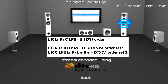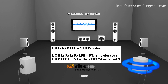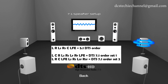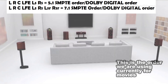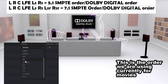DTS 5.1 were given in compact discs in the order L R Ls Rs C and LFE. DTS 7.1 has two orders: L C R Ls Rs Lr Rr LFE, and L R C LFE Ls Rs Lsr and Rsr.